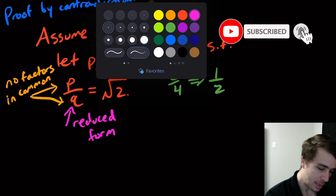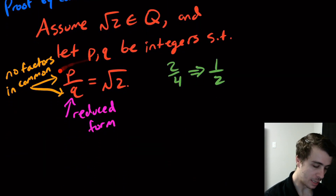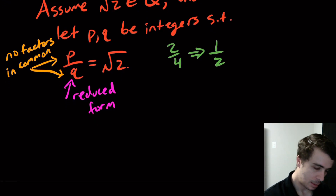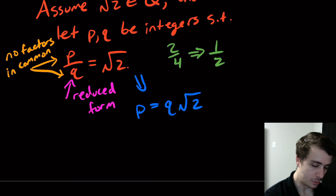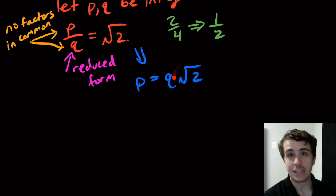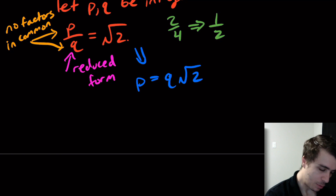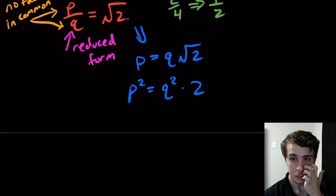Whenever you have an equation like this, just play around with it and see if you can find anything interesting. We can multiply both sides by q to get p equals q times the square root of two. Then we square both sides to get rid of the square root — whenever you have square roots in equations the typical tendency is to eliminate them — giving us p squared equals q squared times two.